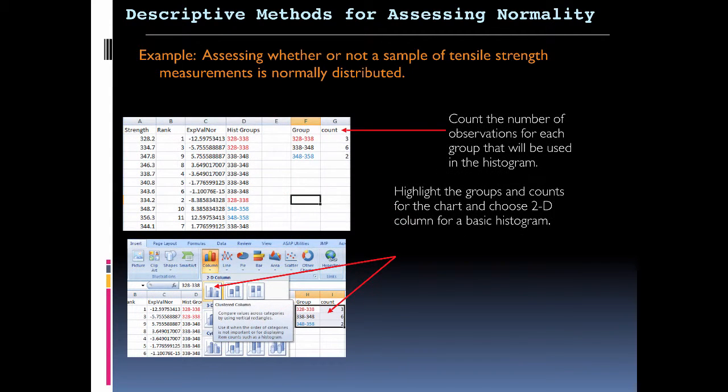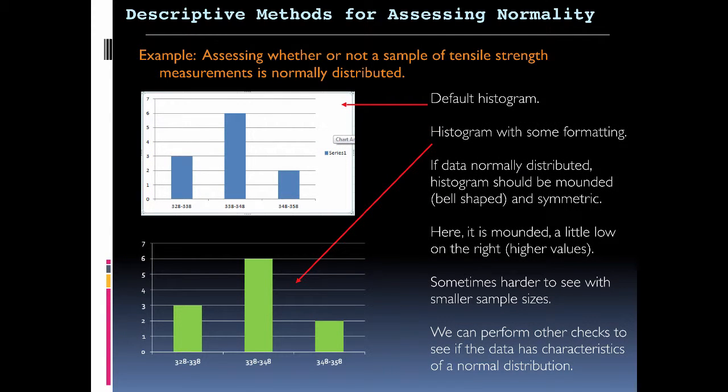These are the histogram groups. This is where the data is falling. The count number of observations for each group in the histogram is here in column G. We're going to look and see this in this two-dimensional chart or graph. Here we go. So this is the default histogram.